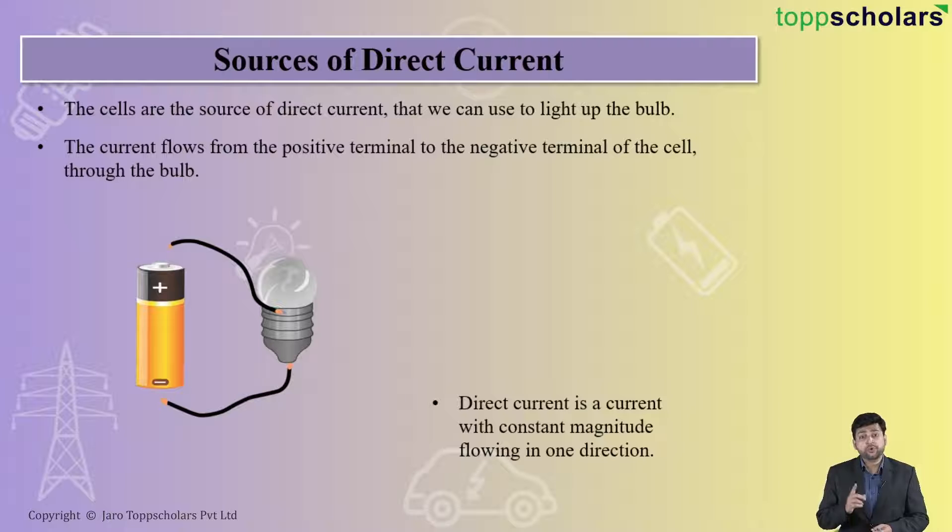Like when you consider the alternating current, it changes its direction again and again, whereas in direct current, the direction remains constant and the magnitude also remains constant. Now students, let's see exactly how a cell works.